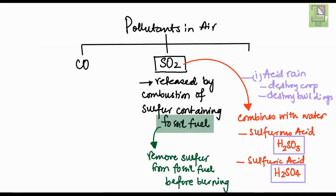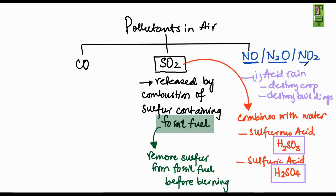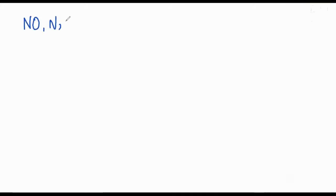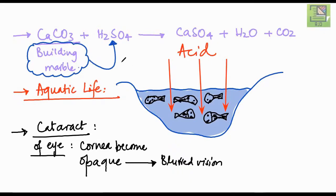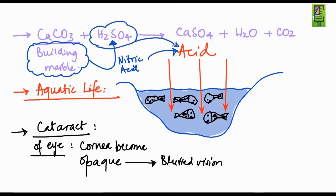Going back to the pollutants: we have discussed the effects of sulfur dioxide, which causes acid rain. The oxides of nitrogen — NO, N₂O, and NO₂ — can also cause acid rain, as they combine with water to make nitric acid. The effects are similar: buildings and aquatic life are affected. However, nitric acid is comparatively weaker than sulfuric acid and does not have the same degree of effect.